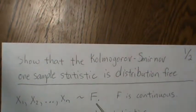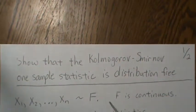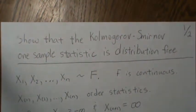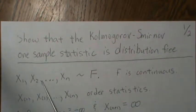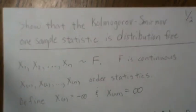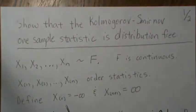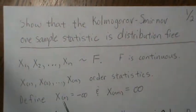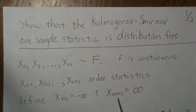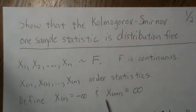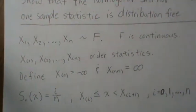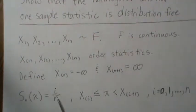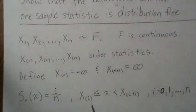We're going to let our data be from some distribution with CDF F, where F is continuous. We have the order statistics X_(1) through X_(n), which are the ordered values of our sample. By definition, we let X_(0) be negative infinity and X_(n+1) be positive infinity.